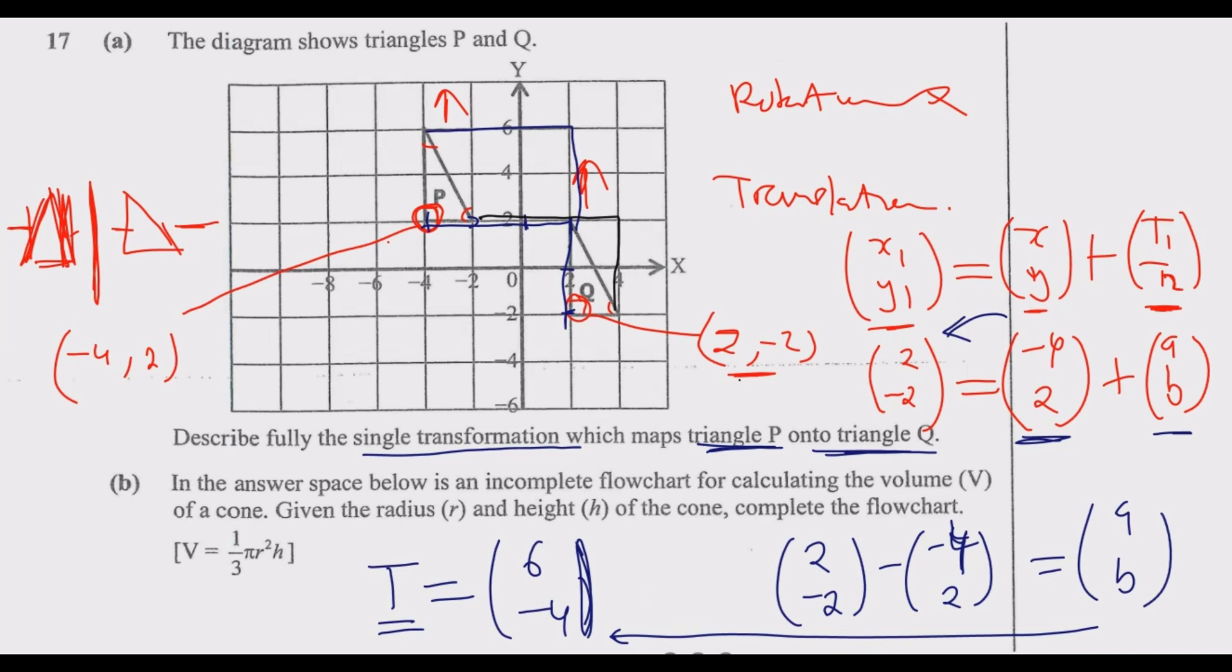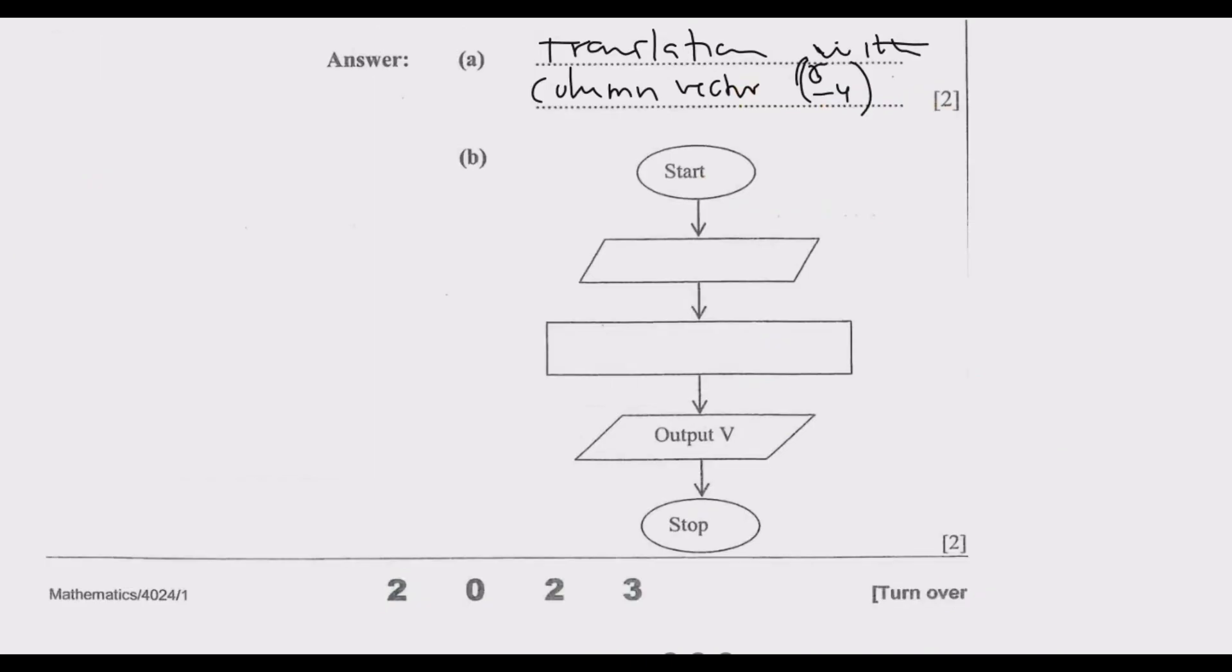Question 17(b): In the answer space below is an incomplete flowchart for calculating the volume V of a cone. Given the radius r and height h of the cone, complete the flowchart. We're given the formula: volume equals 1/3 multiplied by πr² multiplied by h. The first thing is we need to enter the key values, which is r and h.